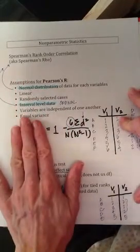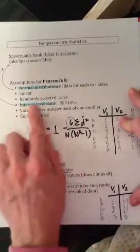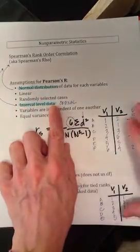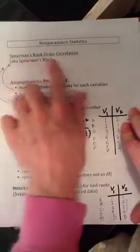Well, if you have a violation of any of these assumptions, you cannot use Pearson's R. But if you have a violation in normal distribution and interval-level data assumptions, you can actually use Spearman's Rho.